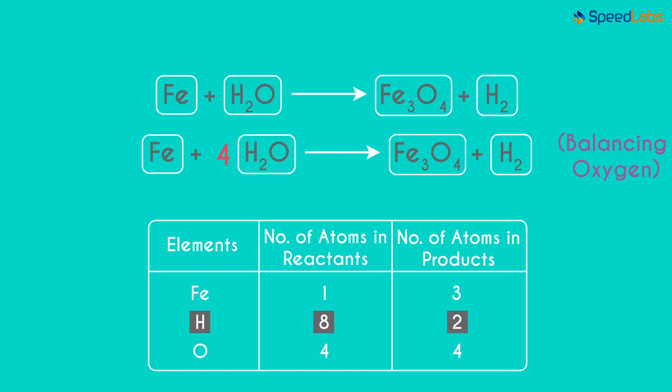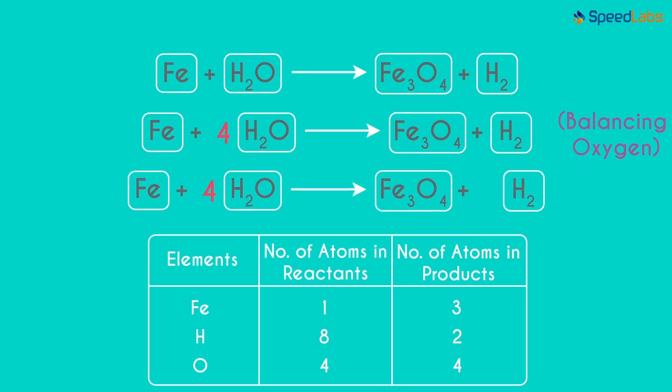As the number of Hydrogen atoms is 8, let's proceed with balancing the Hydrogen atoms next. As it's 8 on the left and 2 on the right, we multiply the Hydrogen on the right with 4.